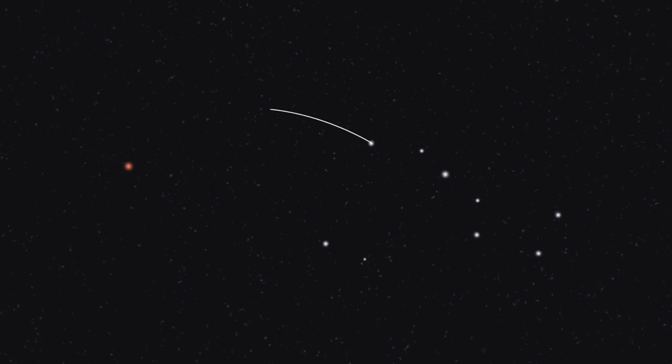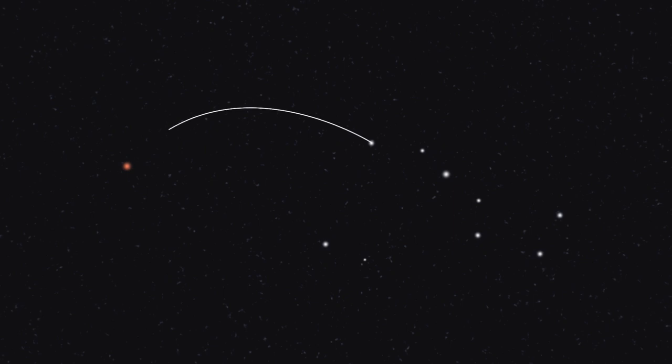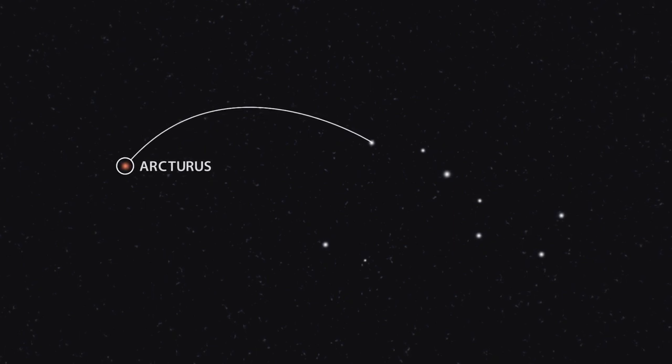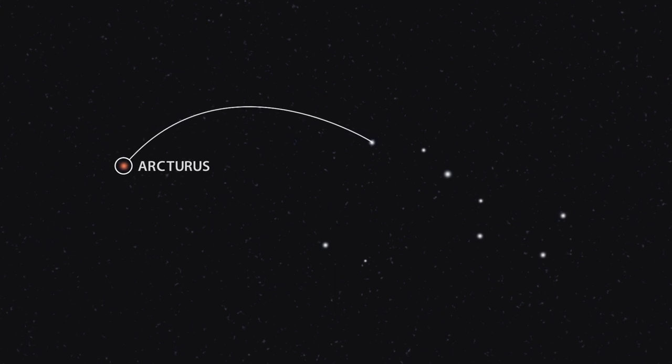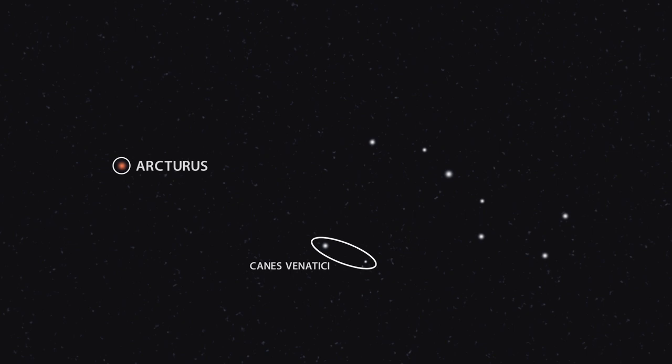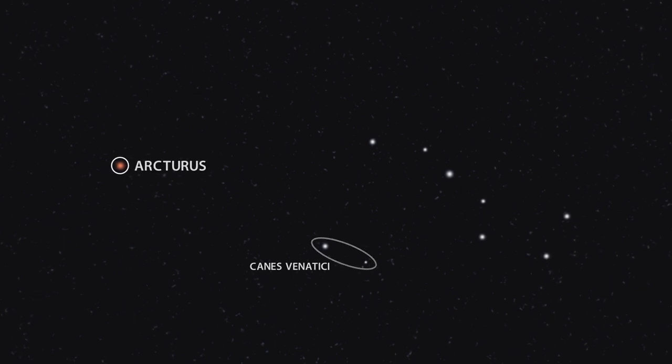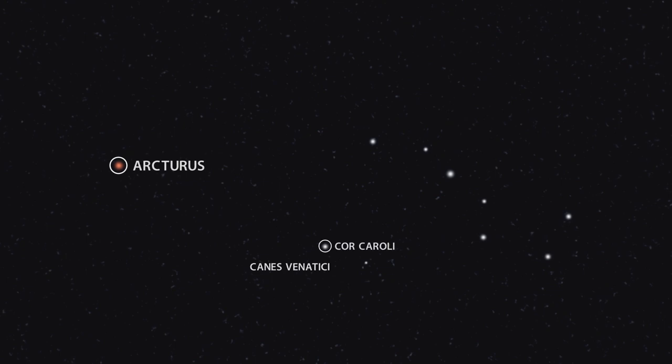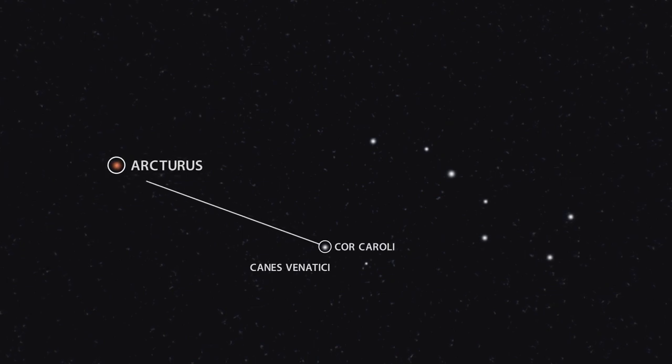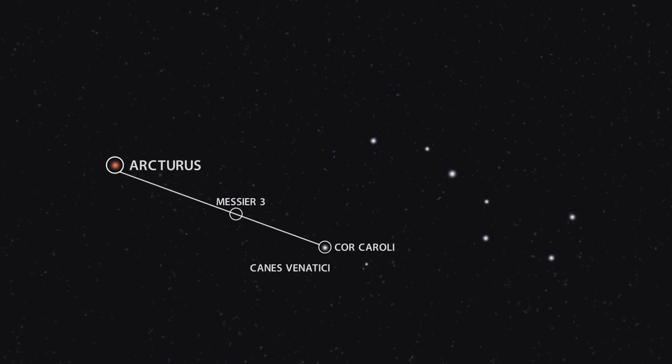To find M3, just go outside on a dark spring night and face the northern half of the sky. We're looking for the bright orange star Arcturus, fifth brightest star in the night sky, and located in the constellation of Boötes, the herdsman. Use the Big Dipper and the mnemonic Arc to Arcturus. All you have to do is extend the curve of the Big Dipper's handle out in an imaginary line for about 25 or 30 degrees until you run into this bright orange star. Next, we need to return to the Big Dipper and look under its handle for the small constellation of Canes Venatici, the hunting dogs of Boötes. The brightest star of Canes Venatici is Cor Caroli. Draw another imaginary line from Cor Caroli to Arcturus. Messier 3 is located about halfway along this line.